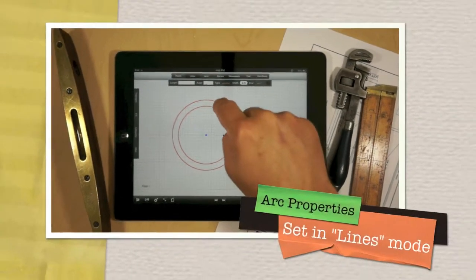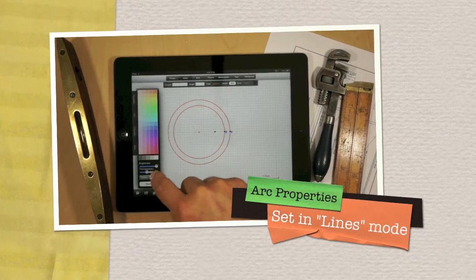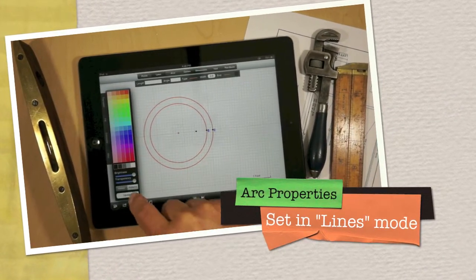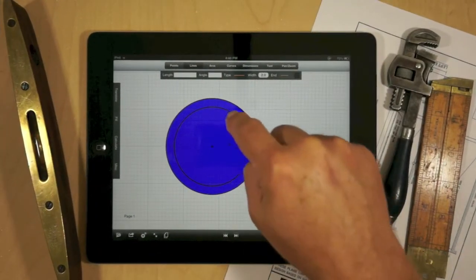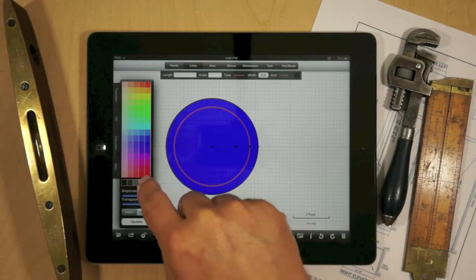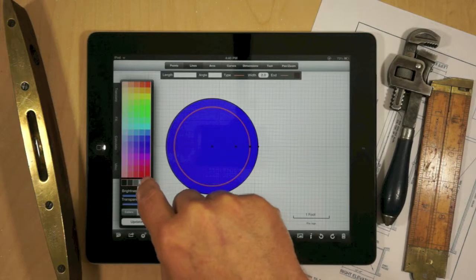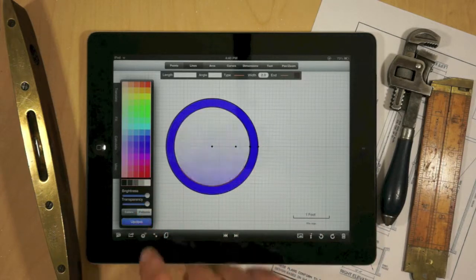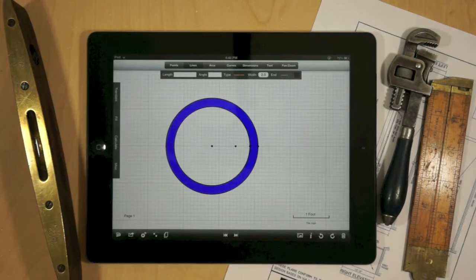In lines mode, if you select a circle, it will automatically give you the fill properties. You can then select a color and update. You can create what simulates a center hole by selecting white and that will give you that appearance.